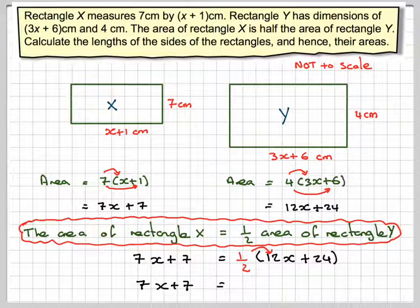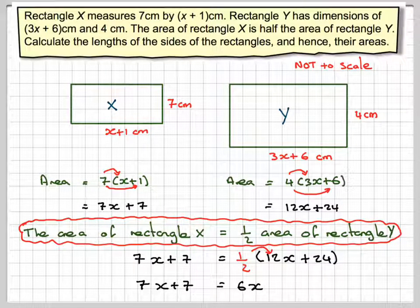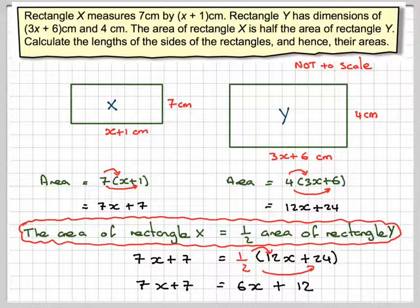That's 7x + 7. This is quite easy. Half times 12 is 6x, and half times 24 is 12.